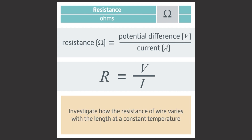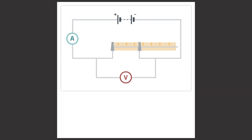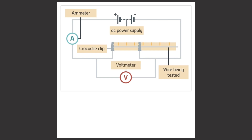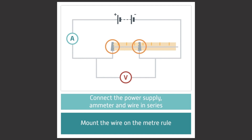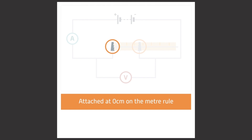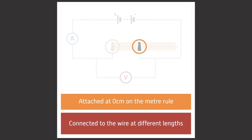In the first part of this pod, we'll investigate how the resistance of wire varies with the length of wire at constant temperature. You'll need to set up a circuit containing a DC power supply, the wire being tested, a couple of crocodile clips, an ammeter and a voltmeter. You also need a wooden meter rule, which goes underneath the wire being tested. Connect the power supply, the ammeter and the wire you are testing in series. The wire should be mounted on the meter rule and connected in the circuit using crocodile clips. The first crocodile clip should be attached to the wire at zero centimeters on the meter rule. The second crocodile clip can be connected to the wire at different lengths. The voltmeter should be added in parallel with the wire being tested.